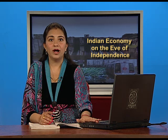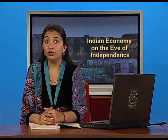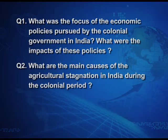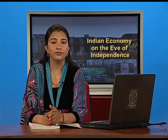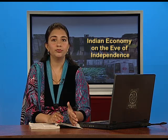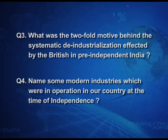Now you should be able to answer the following questions. Question 1: What was the focus of the economic policies pursued by the colonial government in India, and what were the impacts of these policies? Remember the twofold motive and the feeder economy. Question 2: What were the main causes of agricultural stagnation in India during the colonial period? Question 3: What was the twofold motive behind the systematic de-industrialization effected by the British in pre-independent India? Remember — first, to make India a net supplier of raw materials for British industries, and second, to convert India into a sprawling market for British finished goods. Question 4: Name some modern industries which were in operation in our country at the time of independence.